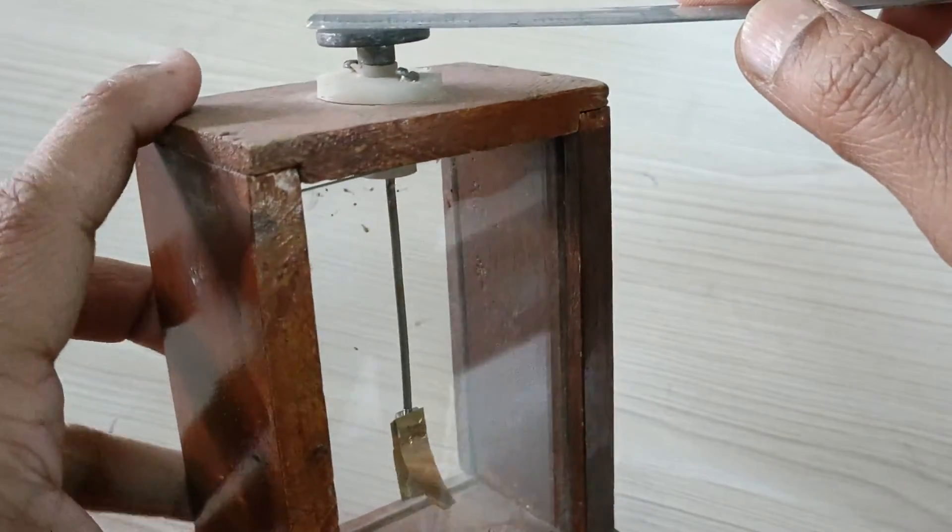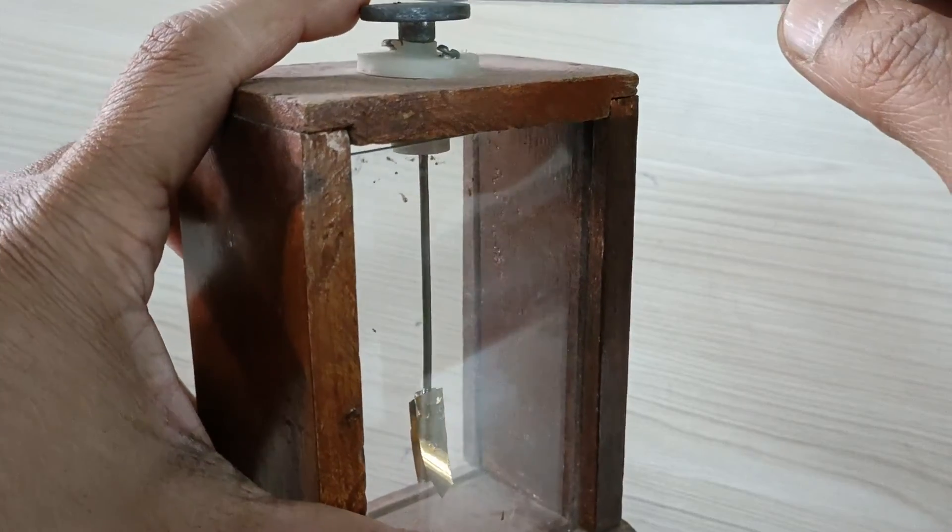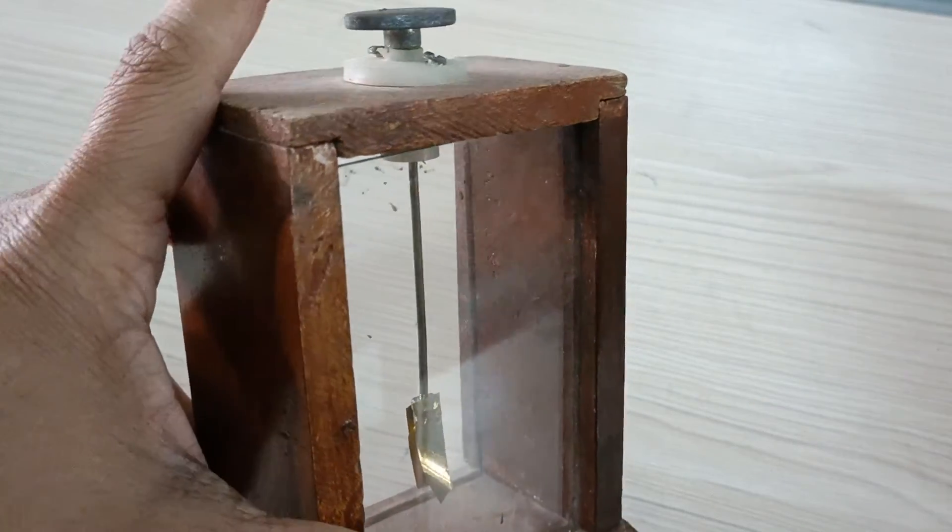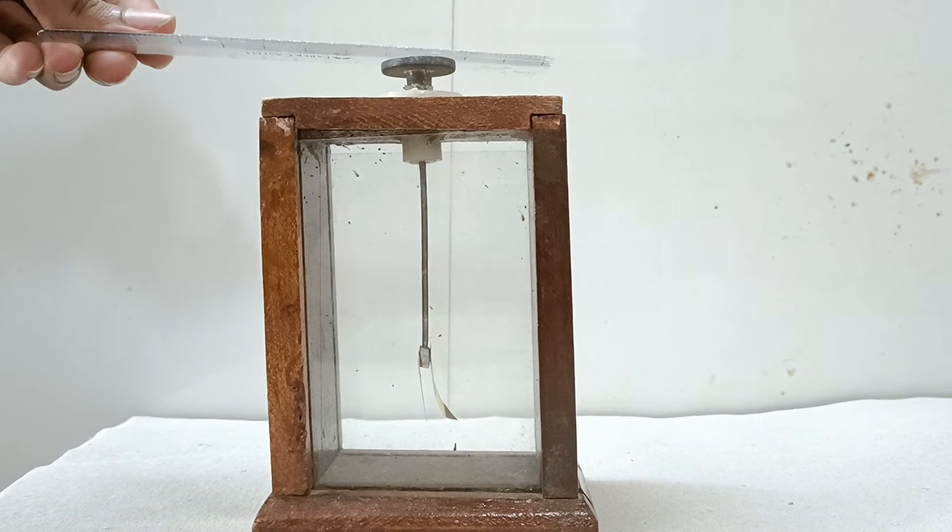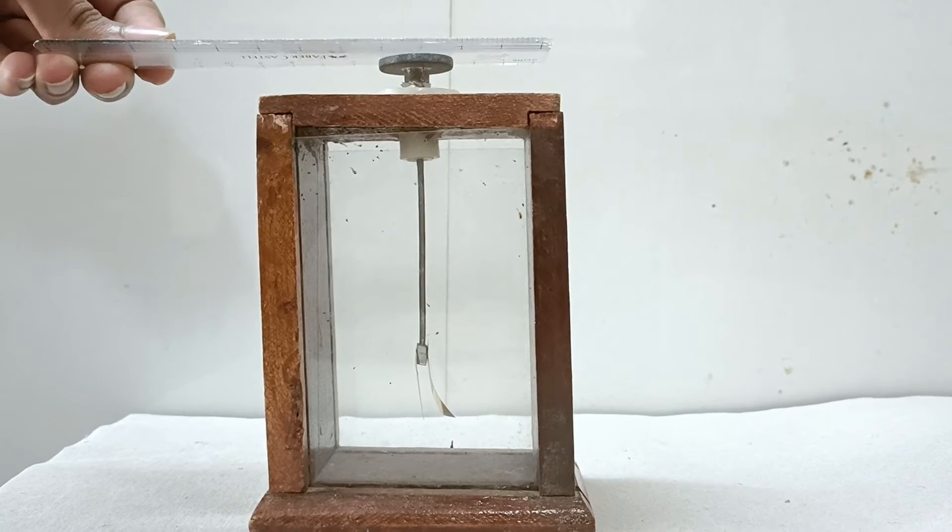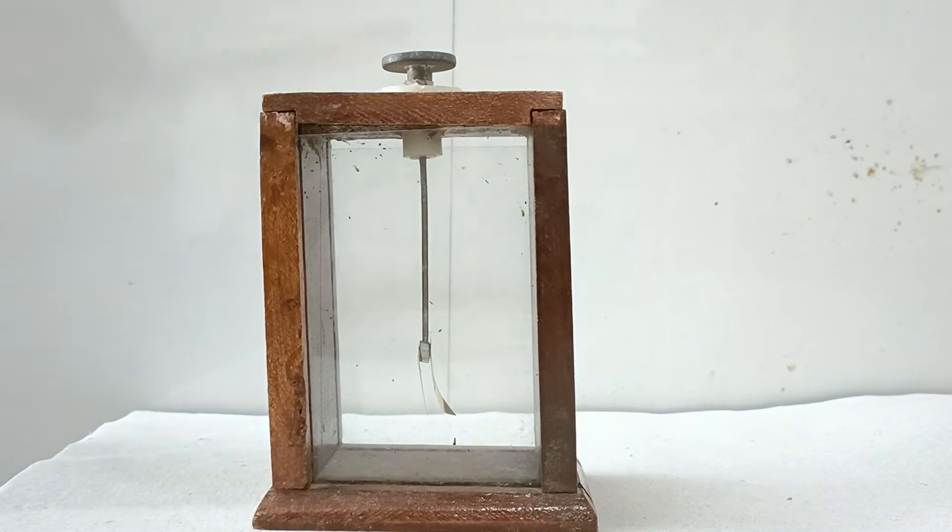By touching the negatively charged plastic scale, conduction phenomenon takes place and the electrons transfer from the scale to the brass cap and finally into the gold leaves. As a result, the gold leaves become negatively charged and they start repelling each other, and hence they move apart.